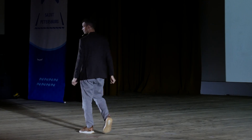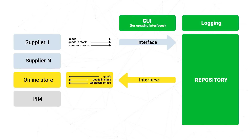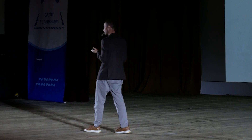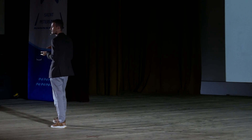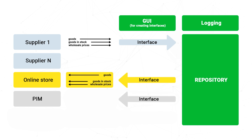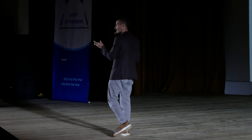Let's think about what will happen if we add another system — a PIM system, for example. We have a 'blue pen' and a 'blue pen' separated by an underscore. We know both are blue and we need to create a master product. During the PIM system integration, no other system will change. The online store will not change either, if the integration is done properly. The PIM system will use the same repository.